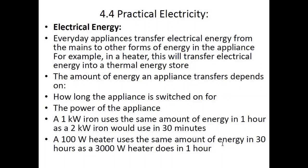Electrical energy: everyday appliances transfer electrical energy from the mains into other forms. For example, in a heater electrical energy is transferred into heat energy; in a light bulb it is transferred into light energy. The amount of energy transferred depends on how long the appliance is switched on and the power rating of that appliance — how much power it requires to operate.